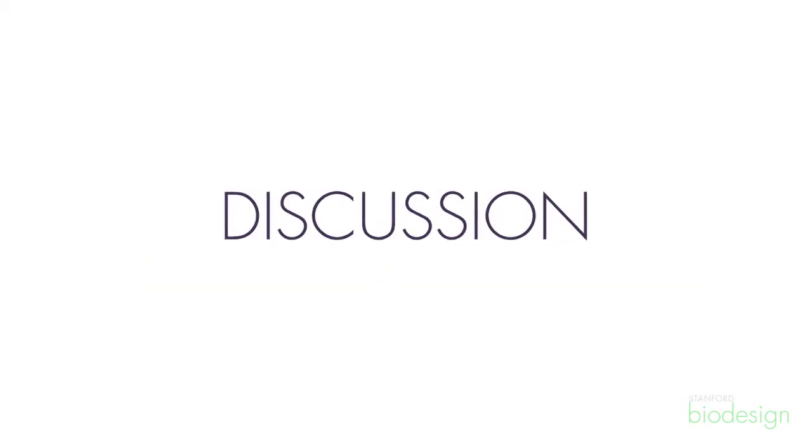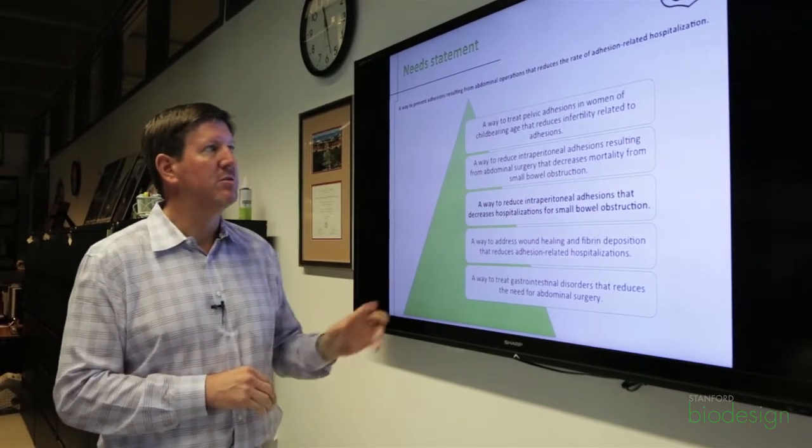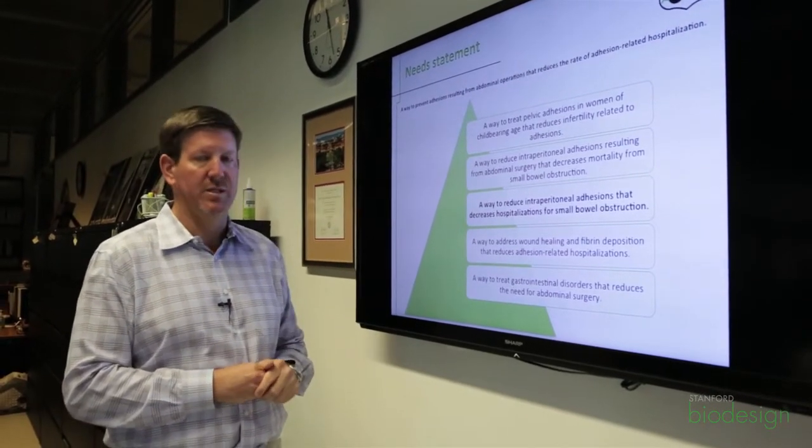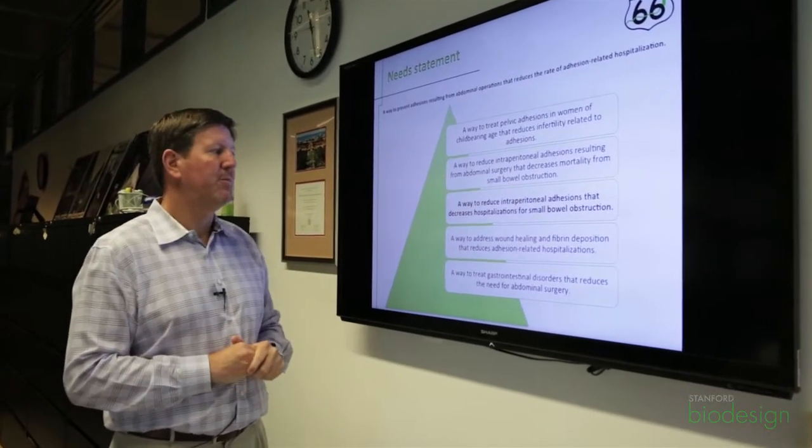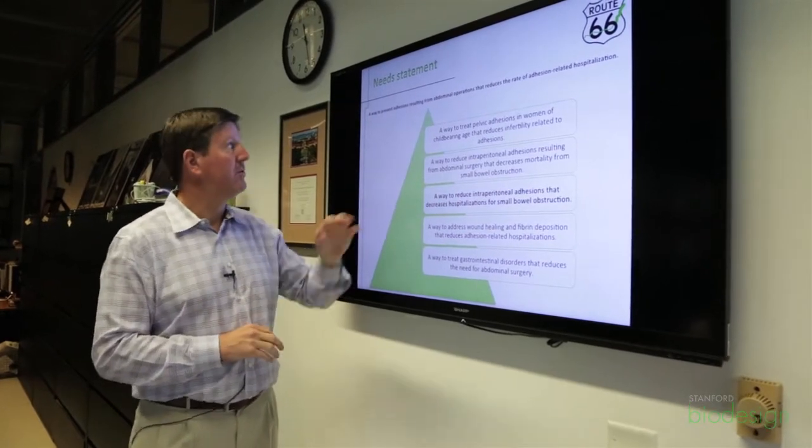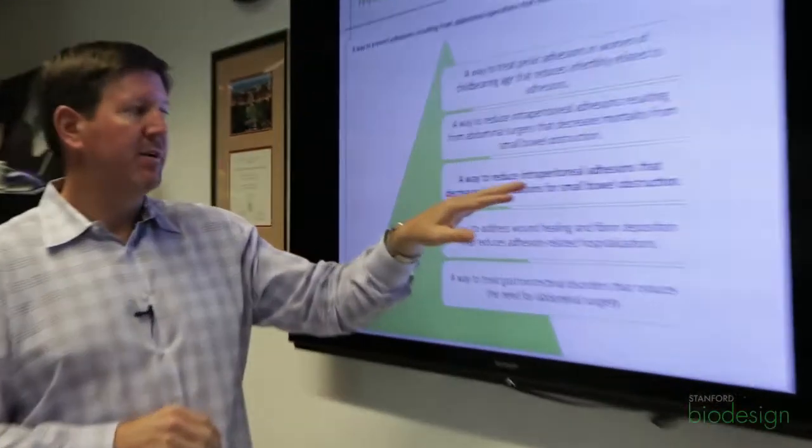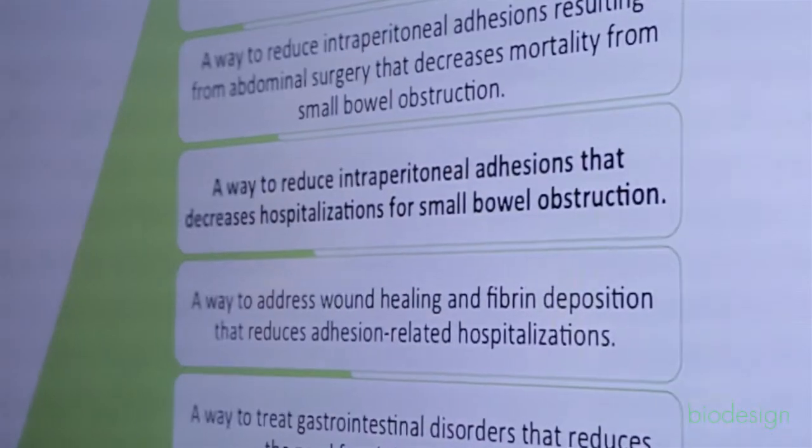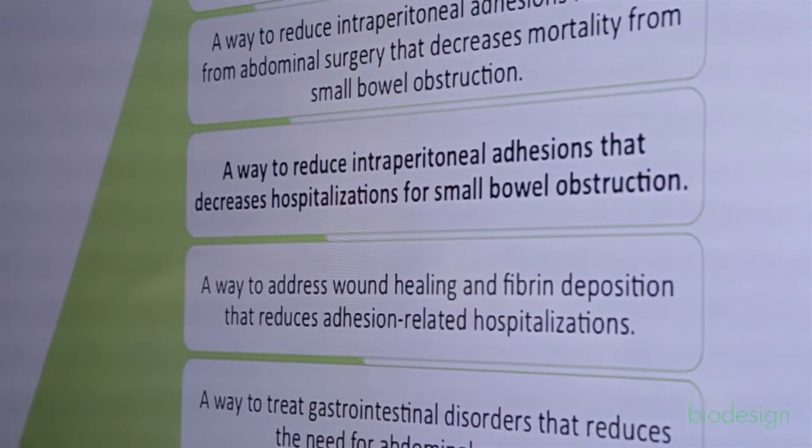The original need statement given was a way to prevent adhesions resulting from abdominal operations that reduce the rate of adhesion-related hospitalization. So the team actually ended up starting with what they thought was the centerpiece, which is a way to reduce intraperitoneal adhesions that decrease hospitalization from small bowel obstruction. So really, the decreased hospitalization is the outcome as a consequence of small bowel obstruction.